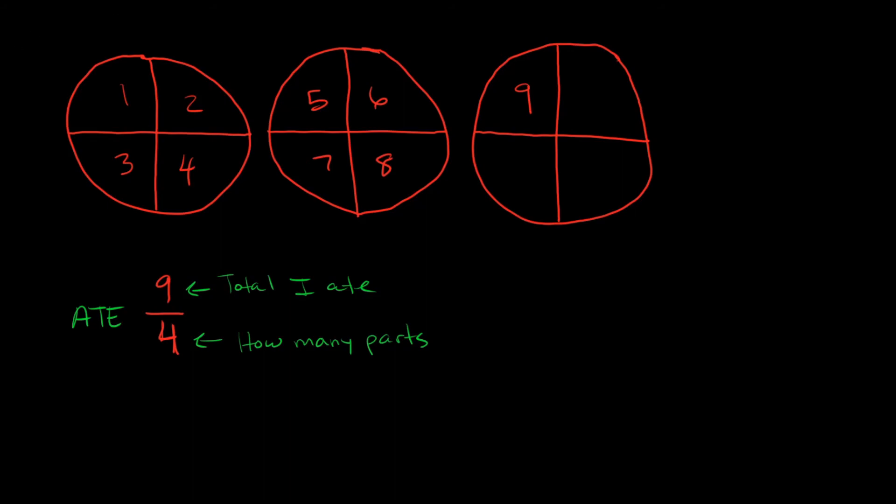So again, improper fractions still look a little weird, so maybe it'll be helpful if we convert this to a mixed number. So what's a mixed number again? So a mixed number is a combination. So a whole number and a proper fraction.